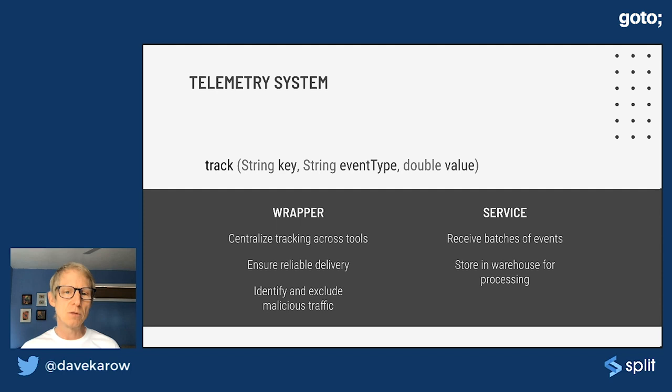So it's really important, though, that the telemetry data includes a key for the user, the same thing that was used to assign them an experience. Because that's how you're going to do the attribution and tie the data to the features.